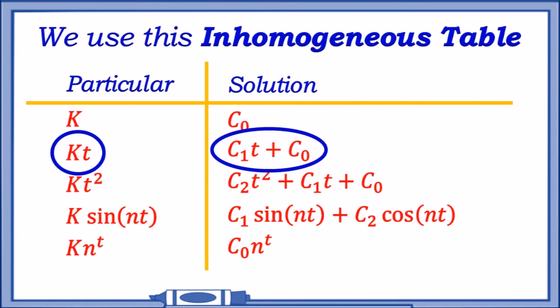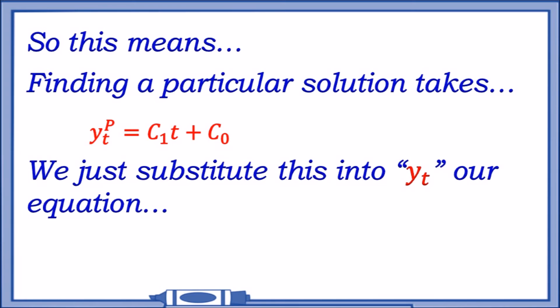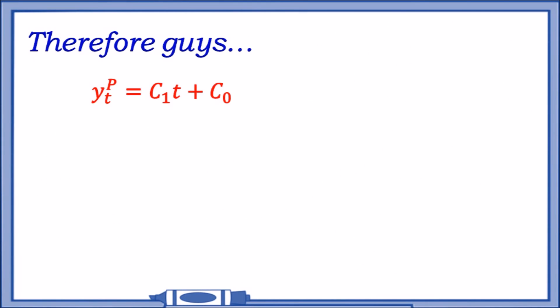This means that finding a particular solution is going to take the form of this. Our particular solution is going to equal a constant we call C₁ times t plus C₀. What do we do with this? We just substitute this back into our y(t) equation that involves y(t), y(t+1), y(t+2). We also need to find y(t+1) and y(t+2). We just replace the values t and t+1.